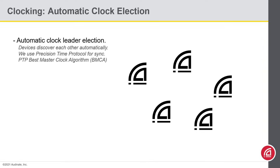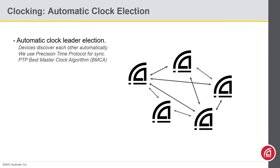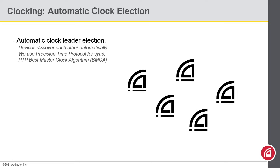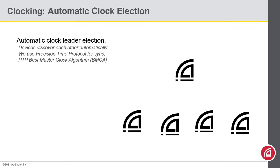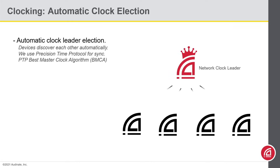Dante devices will automatically discover each other on the network. From there we use Precision Time Protocol for sync, and that protocol has a process called the BMCA — best master clock algorithm — which will automatically choose a clock leader based on a multitude of parameters.